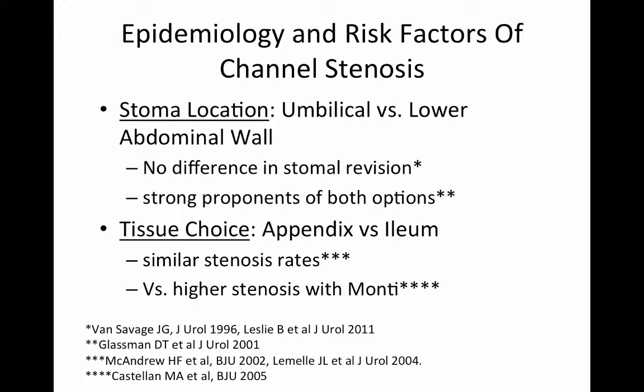Stomal location does not appear to be predictive of the risk of channel stenosis. Whether the channel has been located on the lower abdominal wall or at the umbilicus, revision rates appear to be similar, yet there remain strong proponents of both options. Similarly, the literature is conflicted as to whether appendix versus ileal channels have higher rates of stomal stenosis. Overall, the risk of stomal stenosis appears similar between appendiceal Mitrofanov and ileal Monti, although some series would suggest a higher rate of stenosis with a spiral Monti.